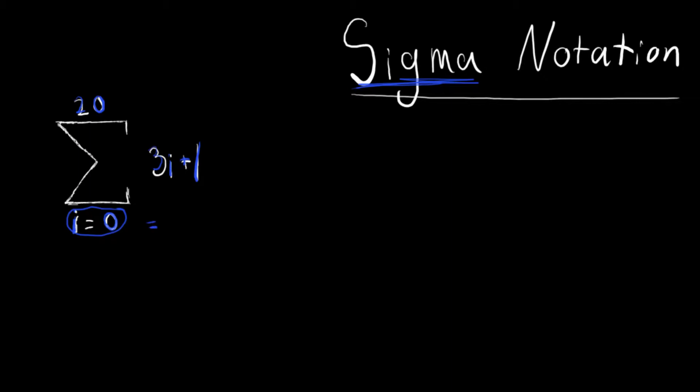So really, this would be equal to 3 times 0 plus 1, which 3 times 0 is 0, plus 1. Equals 1.